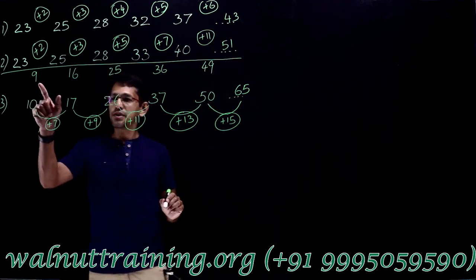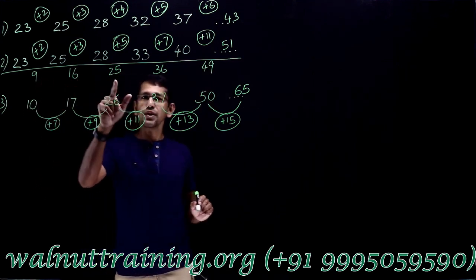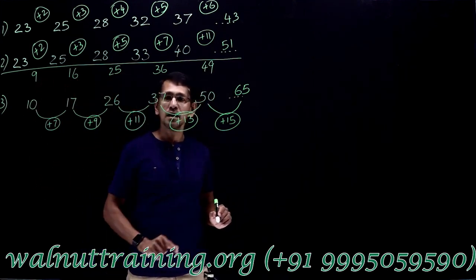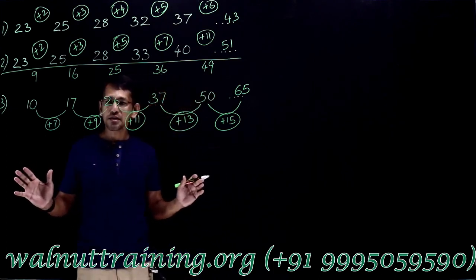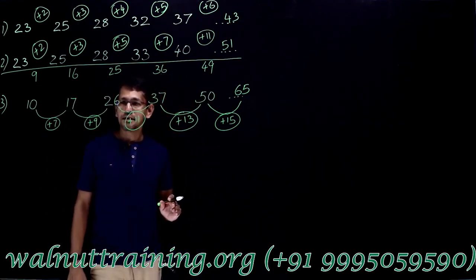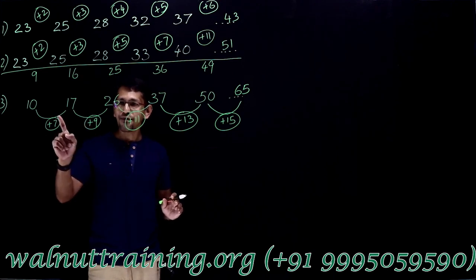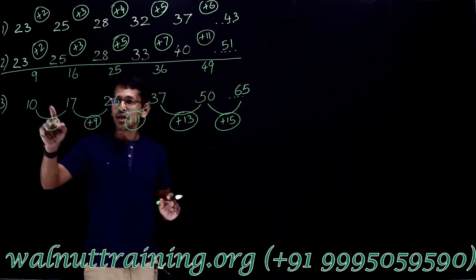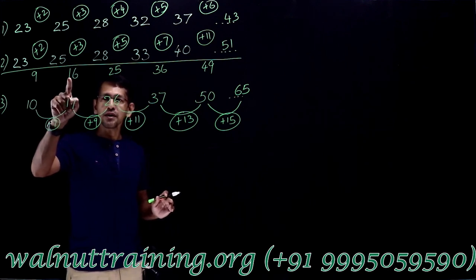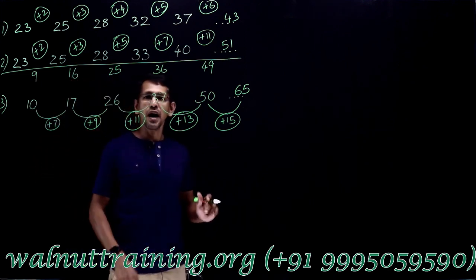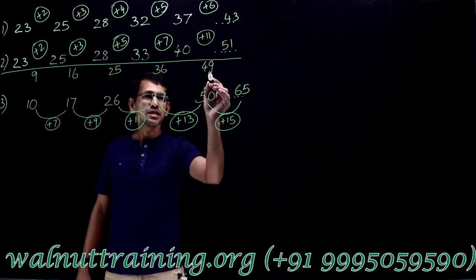Now, think about these numbers. Look at these numbers: 9, 16, 25, 36, 49. Do you have anything come to your mind at this point of time? These are the squares of counting numbers starting from 3. So, what is it? 3 square, 4 square 16, 5 square 25, 6 square 36, 7 square.